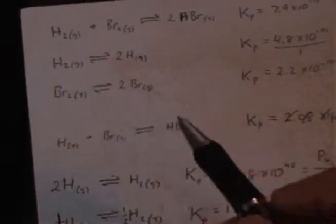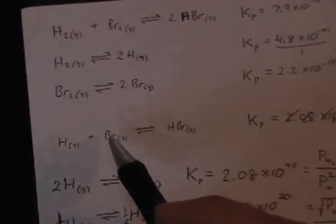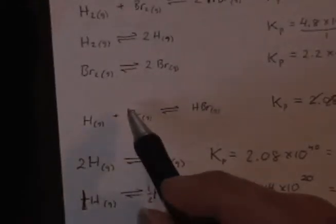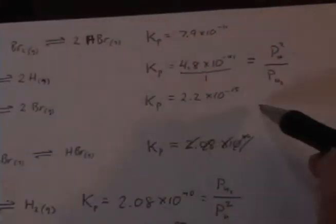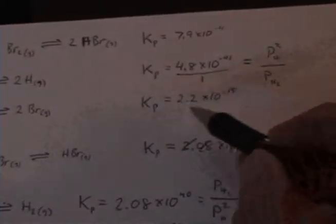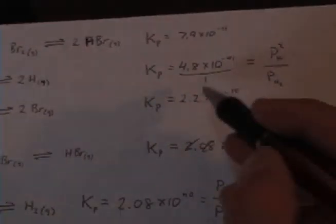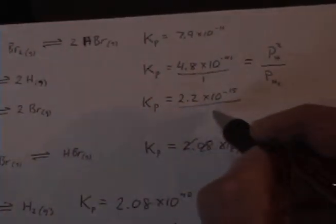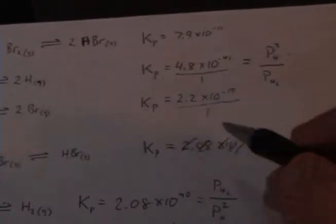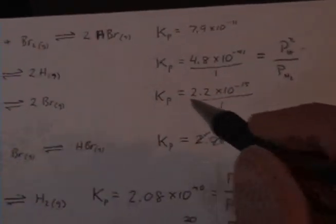I'm going to do the same process. I need to flip it and divide that by 2, which means I'm going to take the reciprocal of this value. So instead of negative 15, it's going to be 1 over that. And then the square root.